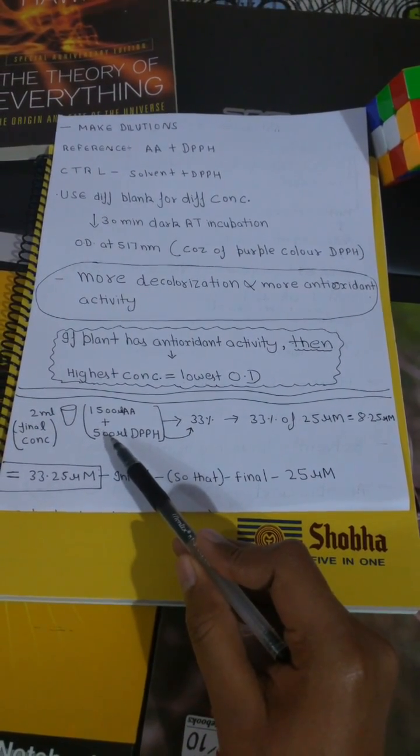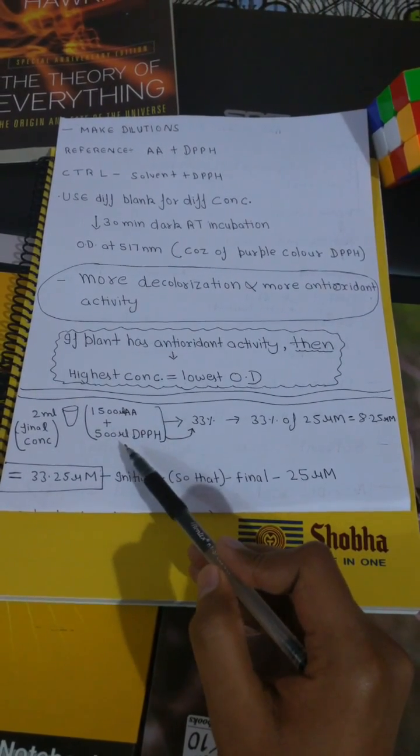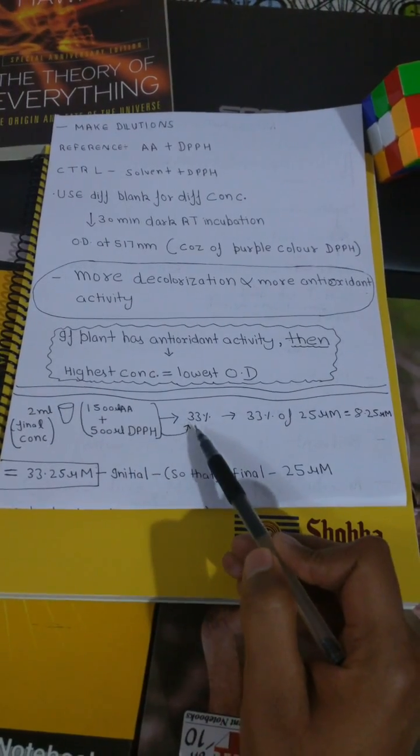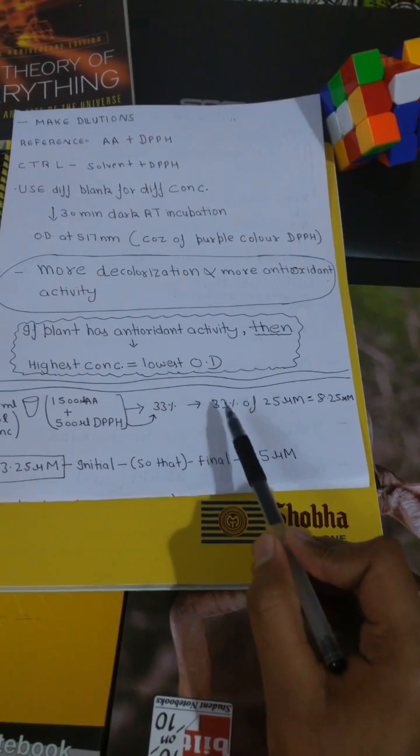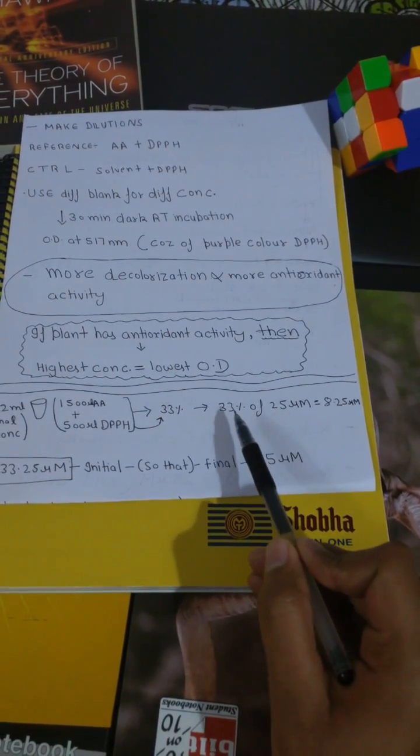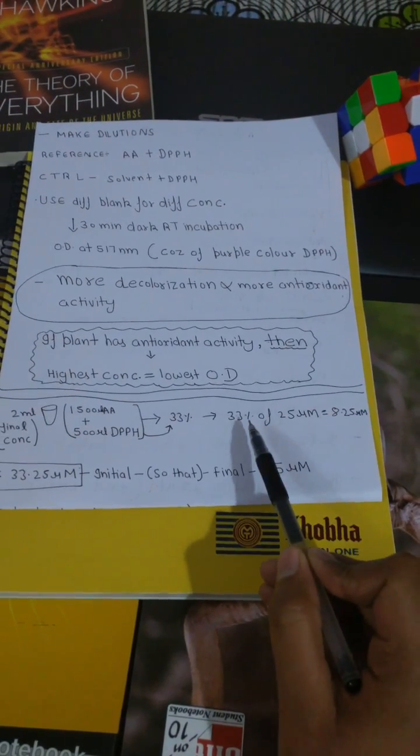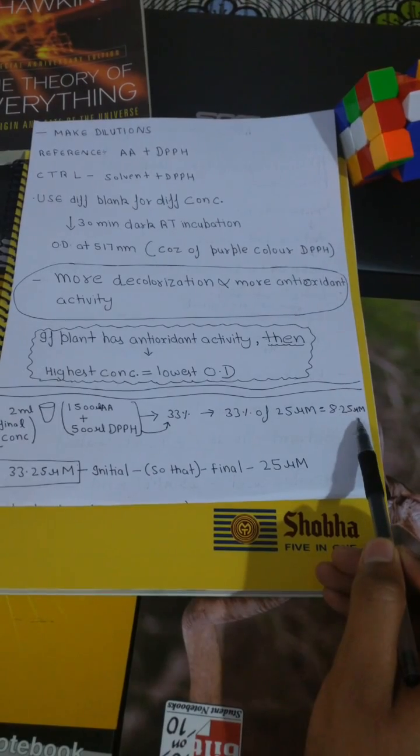So here 500 microliter comes out to be 33% of 1500 microliter. Now find out what is 33% of your desired end concentration. In this case, our desired end concentration is 25 micromolar and 33% of 25 micromolar comes out to be 8.25 micromolar.